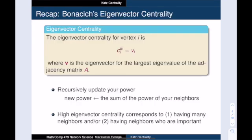In order to motivate the need for Katz centrality, we will look at eigenvector centrality on directed networks. First, let's recap what we learned about eigenvector centrality in the last video. The eigenvector centrality score for vertex i is equal to the i-th entry of the dominant eigenvector of the adjacency matrix. These eigenvector entries are actually the limiting values for the following process: recursively update your power to be the sum of the power of your neighbors. So having large eigenvector centrality either means that you have lots of neighbors, or you have neighbors who are themselves important.